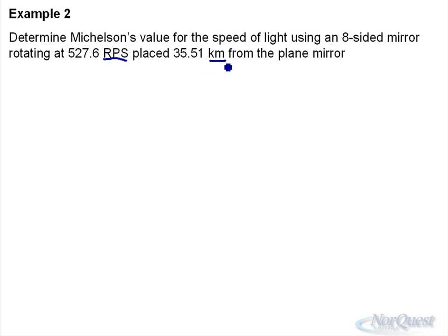So what we want to do is calculate the speed of light using a Michelson type experiment. Velocity equals distance divided by time. We have the distance in this case, it is 35.51 kilometers. So what I'm going to do is write that in terms of meters: 35.51 times 10 to the 3 meters.